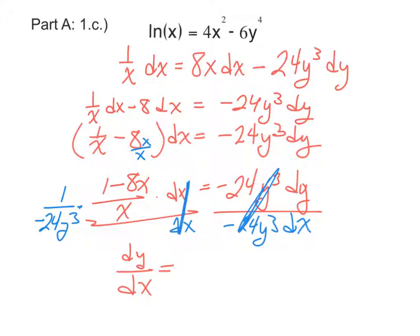And the last thing to do is just to simplify this product. There's not going to be any canceling that can happen. So we're still left with 1 minus 8x in the numerator. In the denominator, we have the negative 24xy cubed.